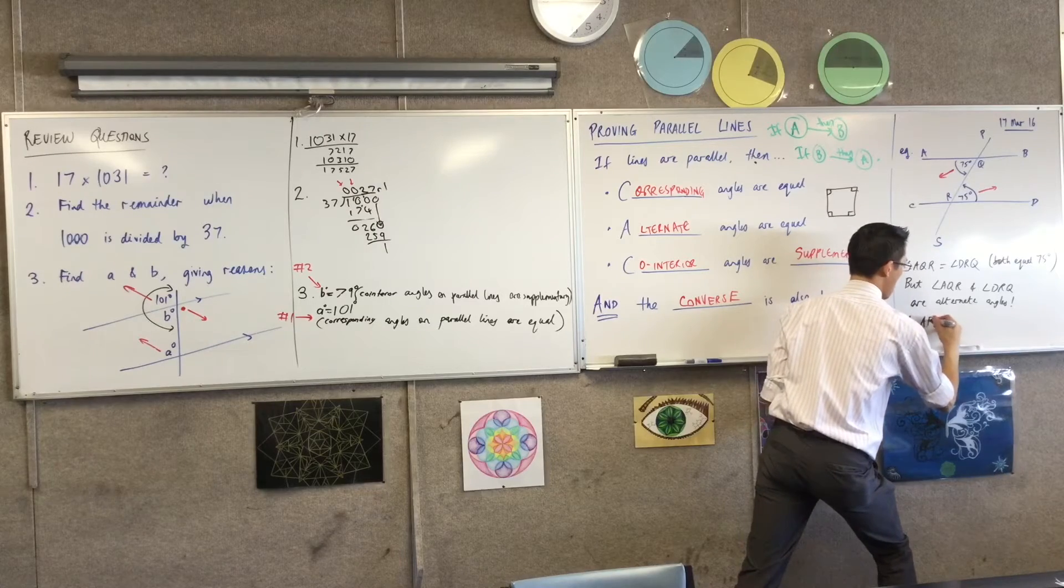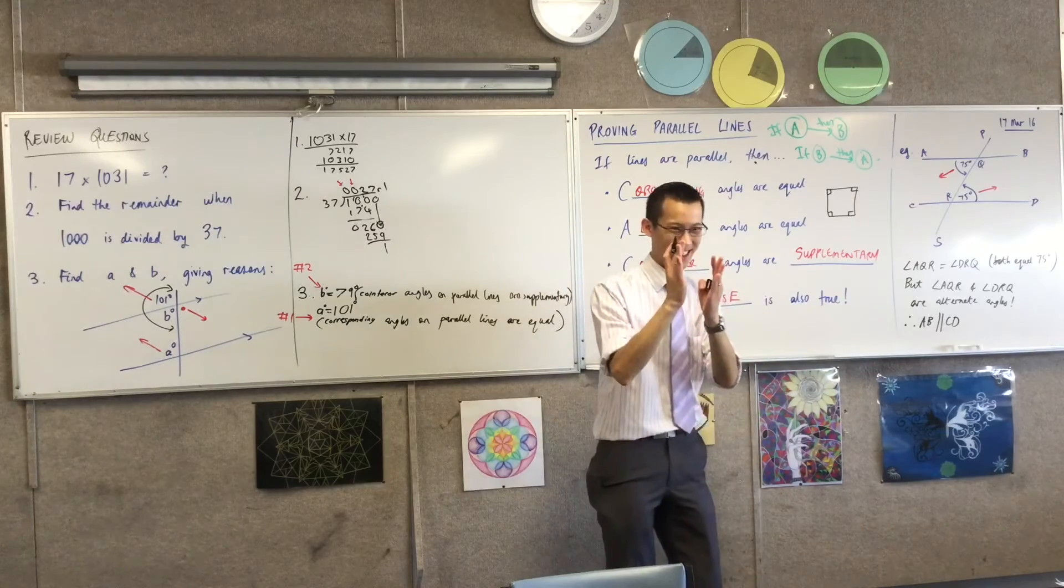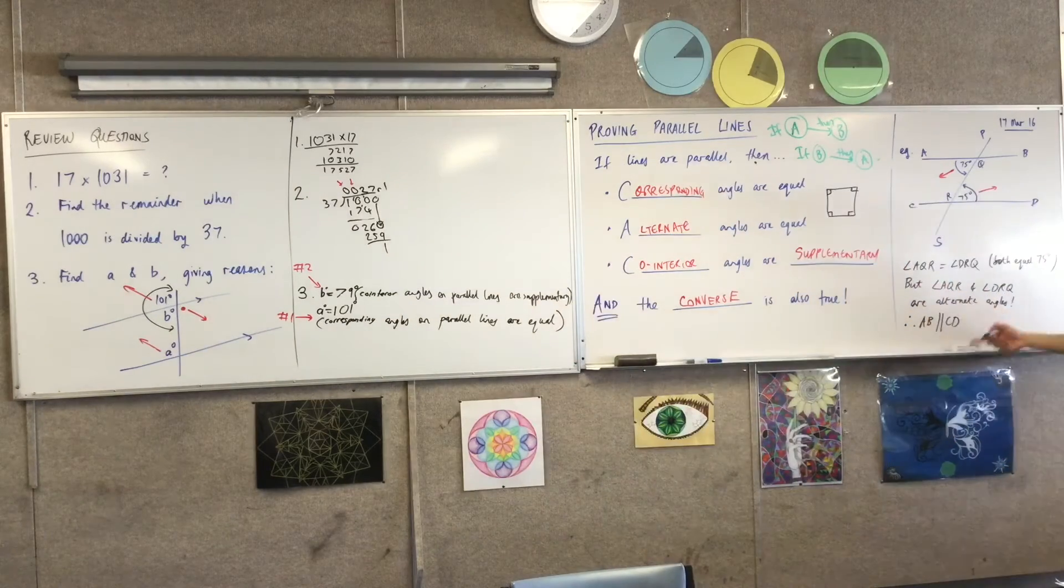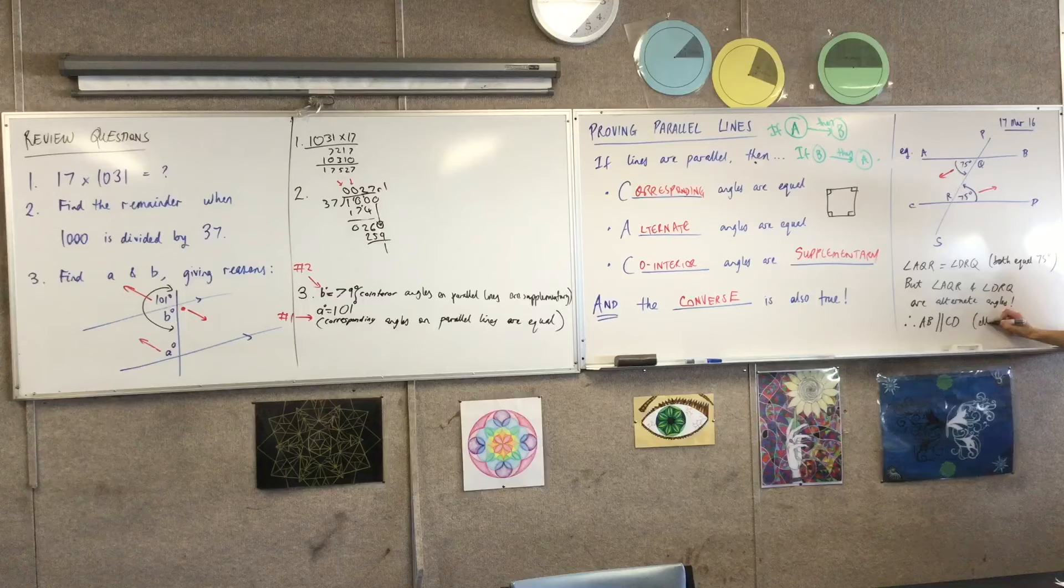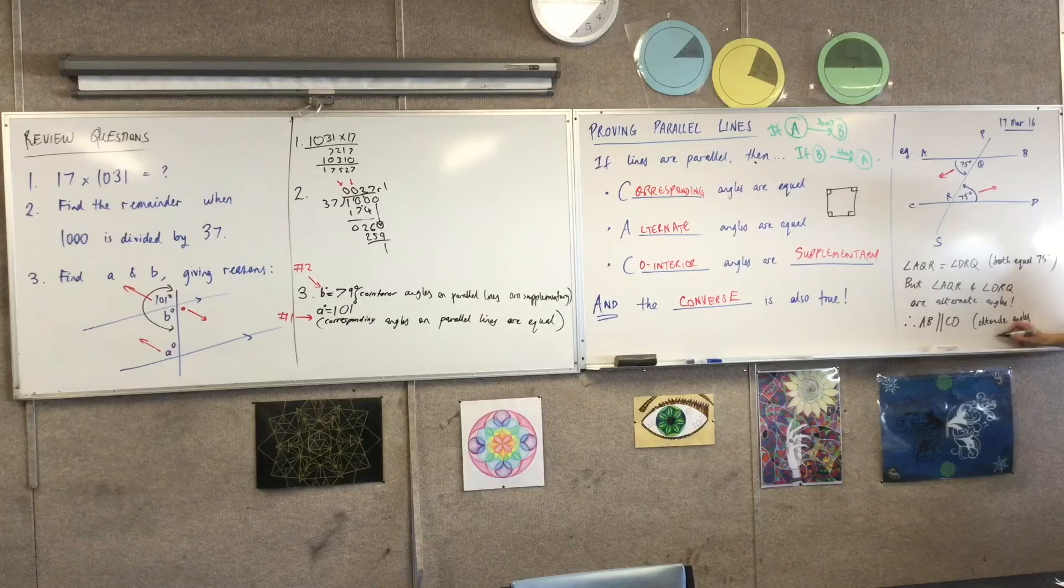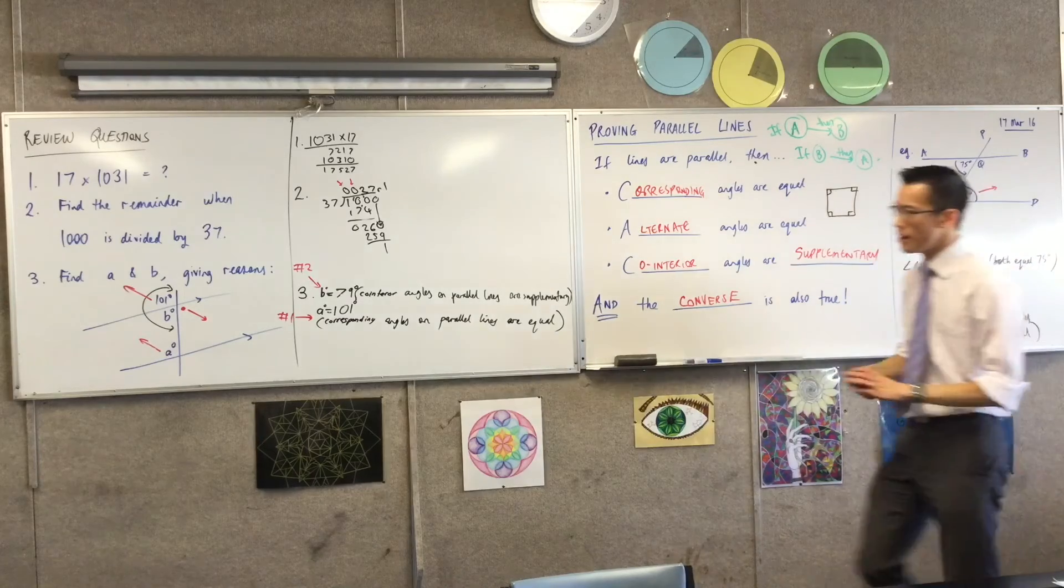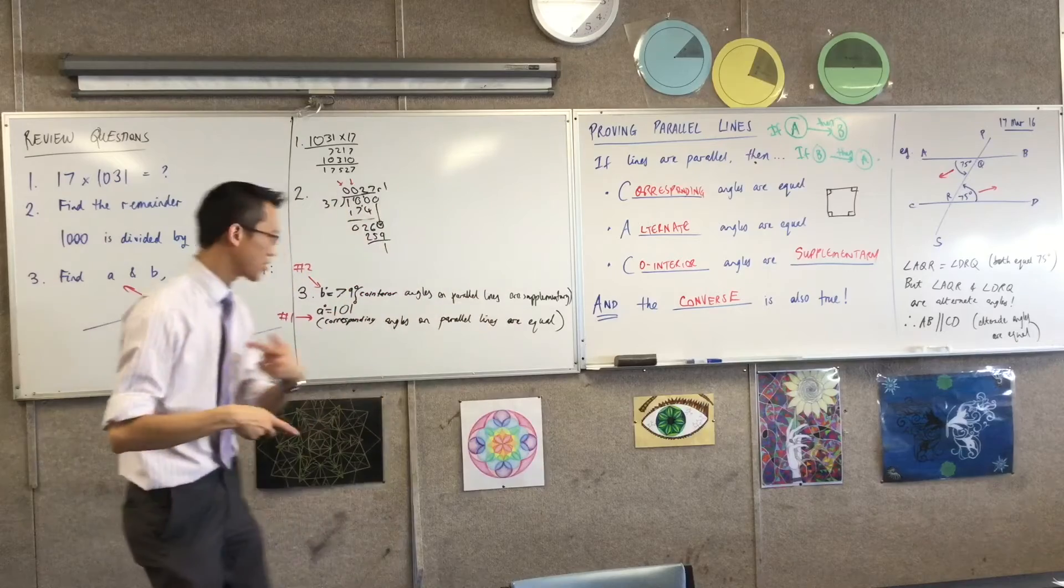Therefore, AB is, you remember our symbol for parallel lines, which are two parallel lines. AB is parallel to CD because alternate angles are equal. So you can see, if you have a look at our review questions, our logic is similar, but it's going in the other direction.